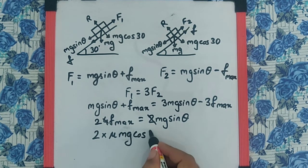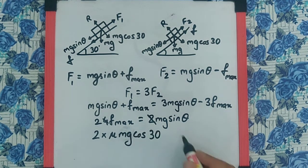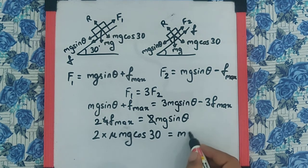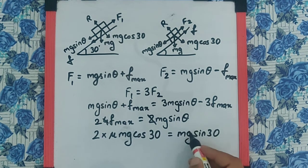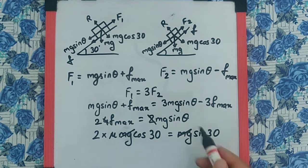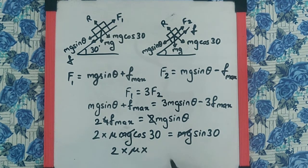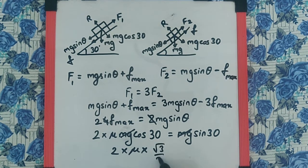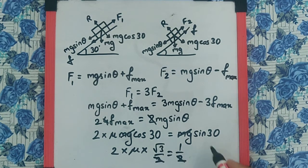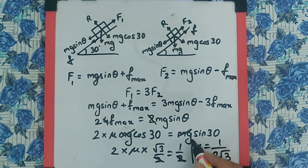That is cos 30, which is equal to mg sin 30. mg gets cancelled. Now 2 times μ into cos 30, and sin 30 is √3/2, and sin 30 is 1/2, so this 2 gets cancelled and we get the value of μ as 1/(2√3), and that is the final answer.